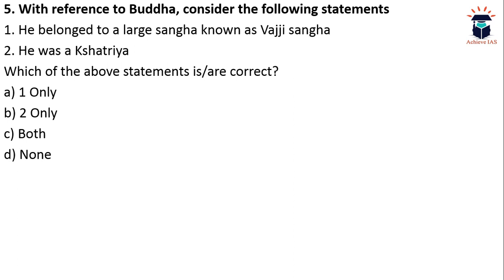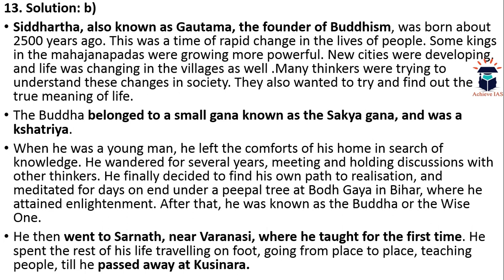The next question is: With reference to Buddha, consider the following statements. First, he belonged to a large sangha known as the Vajji sangha. Second, he was a Kshatriya. Which of these statements is/are correct? The answer is B — second only. Siddhartha, also known as Gautama, the founder of Buddhism, was born about 2,500 years ago. He belonged to a small gana known as the Sakya gana and was a Kshatriya.